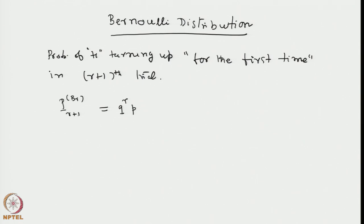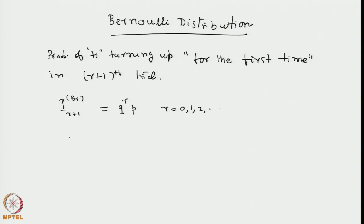To speak in words, the probability of success for the first time in the r plus 1th trial is q to the power r times p, for r equal to 0, 1, 2, and so on. This is like appearing in an examination with no limit on attempts: if p is the probability of passing in each attempt, then the probability of passing for the first time in the r plus 1th attempt, implying failure in the earlier r attempts, is given by the Bernoulli distribution.